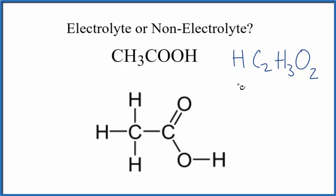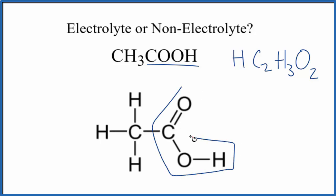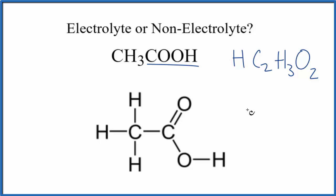HC2H3O2 is another way to write acetic acid — same thing, just written a little bit differently. Looking at the structure, the COOH portion is a carboxylic acid. This H on the carboxylic acid can sometimes come off.